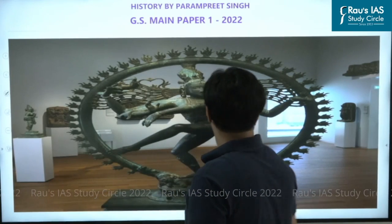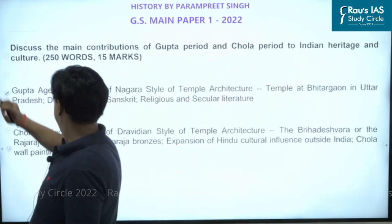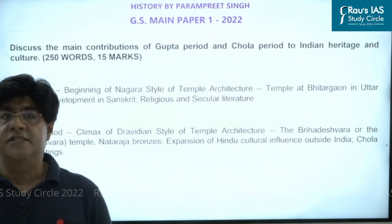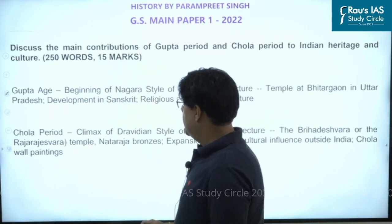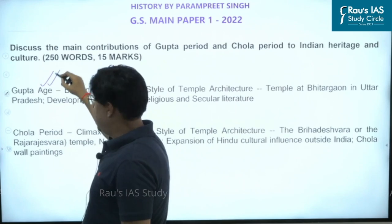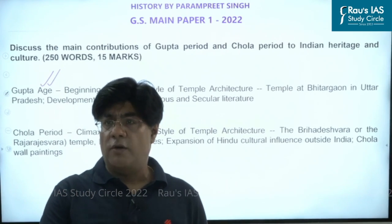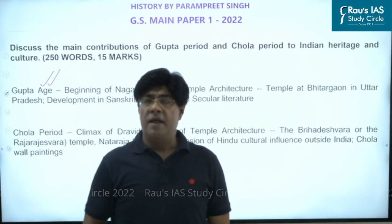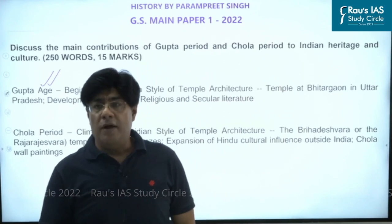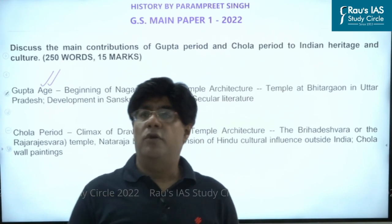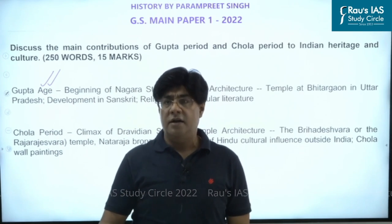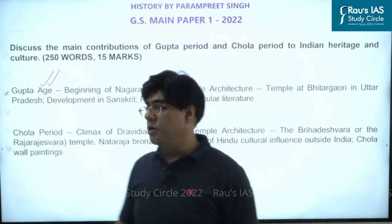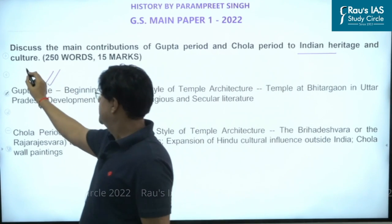The next question from the culture portion is: discuss the main contribution of the Gupta period and the Chola period to Indian heritage and culture. The Gupta age is known as the golden age of India, from the 4th century AD to the 6th century AD. During the Gupta period there was much development in art, architecture, literature, science, and technology, contributing greatly to Indian heritage and culture.